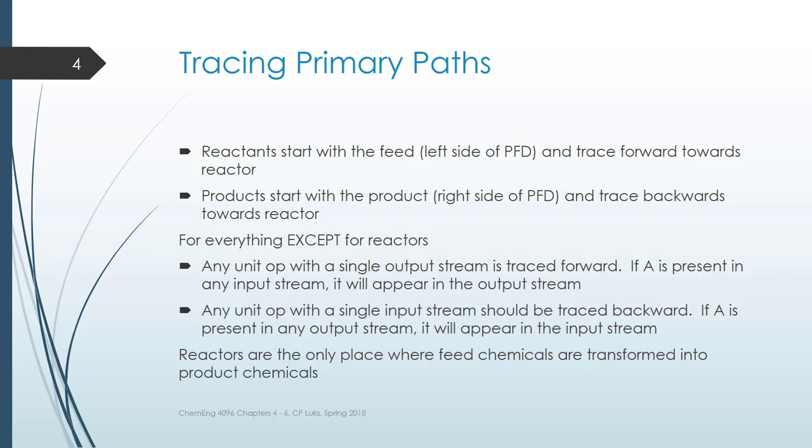For anything other than the reactor, what we're going to do is look at every single unit operation, whether it's a distillation tower, a pump, whatever. If it has a single output stream, we'll trace through those in the forward direction, and if anything is present in the input, it has to appear somewhere in the output also. If it has a single input stream, then we might want to trace that backwards, because anything that's present in the output will be present in the input. These are just logical. Reactors are the place where we have to be tricky because things are being transformed there.